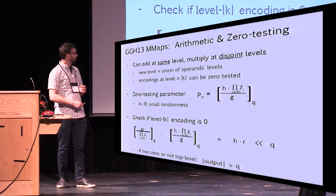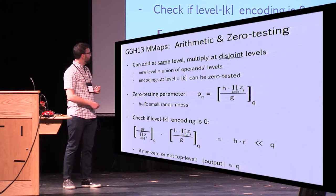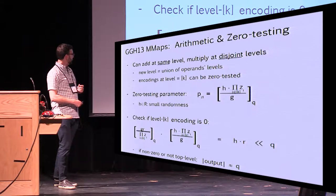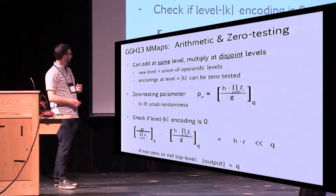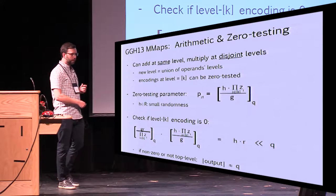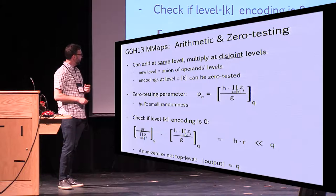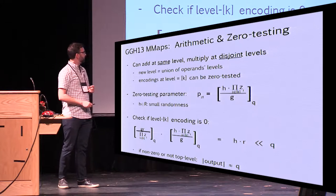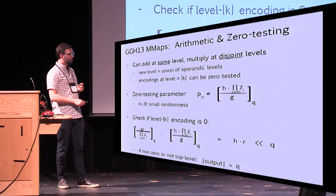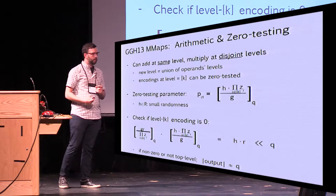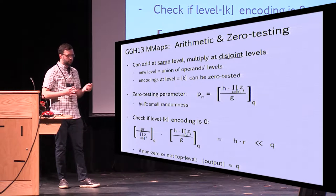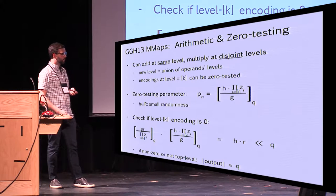For zero testing, you have this zero testing parameter. The procedure is: take an encoding of zero at level K — the top level — and multiply by the zero test parameter. The Z's cancel, the G's cancel, and you're left with R and this value H, which is small randomness in the zero test parameter. If you've done this right, these two things are very small relative to the modulus Q. If your encoding was not zero or not at the top level, the output would have size roughly Q. So you can tell if something is zero or not by checking if it's small.